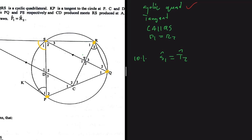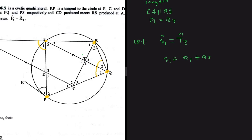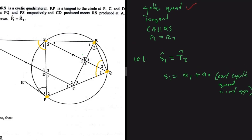Since S1 is an exterior angle of a cyclic quad, it should equal Q1 plus Q2. So S1 equals Q1 plus Q2 — an exterior angle of a cyclic quad equals the interior opposite angles. We've now used the cyclic quad property, so let's look at T2.